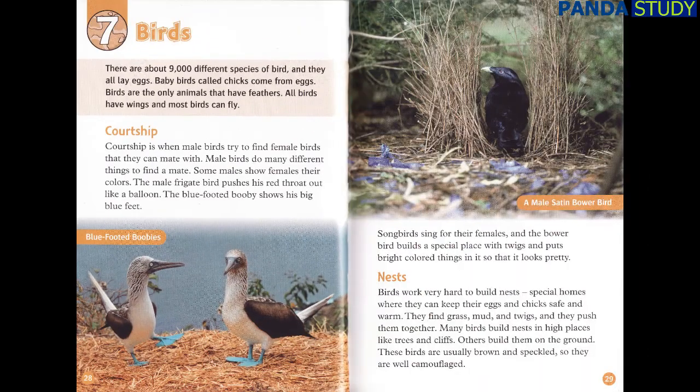Chapter 7: Birds. There are about 9,000 different species of bird and they all lay eggs. Baby birds, called chicks, come from eggs. Birds are the only animals that have feathers. All birds have wings and most birds can fly.